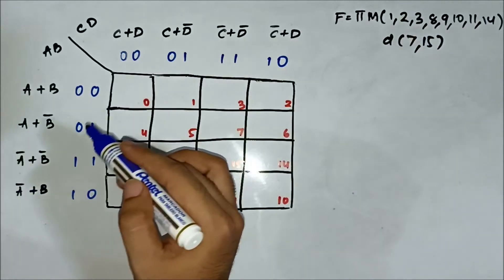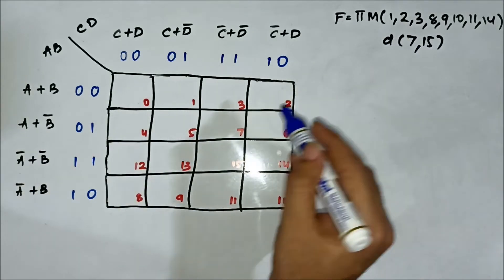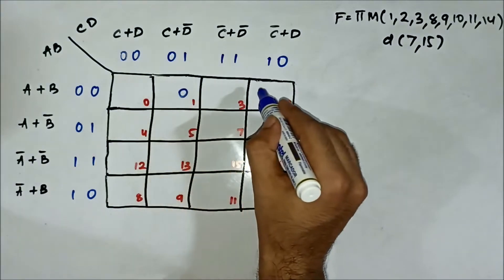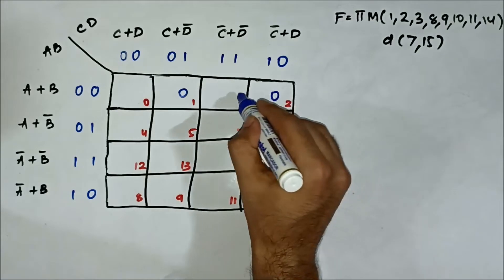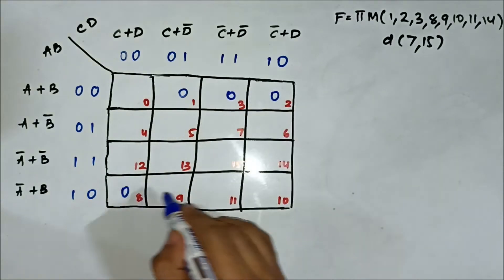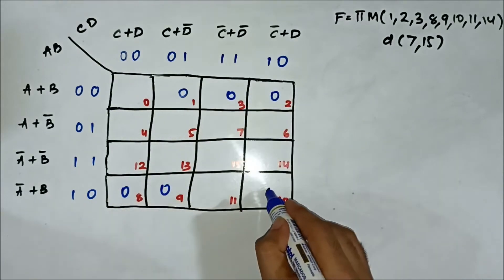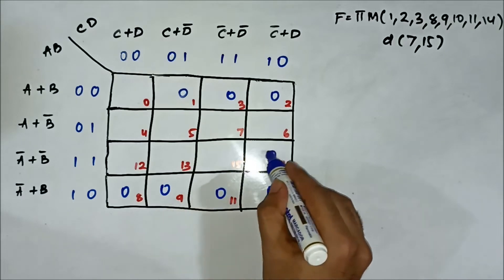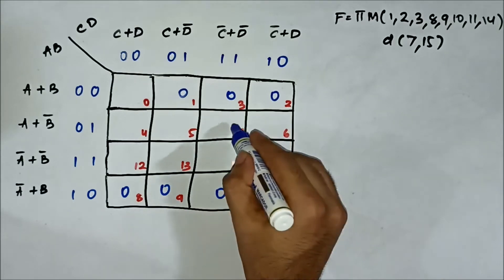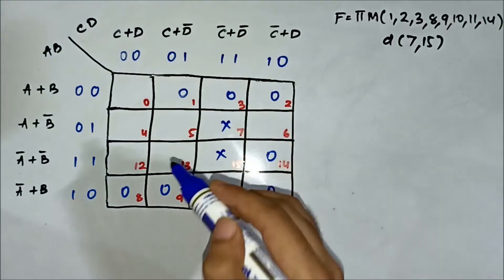We will map them onto the K-map. So mapping 1, 2, 3, 8, 9, 10, 11, 14 as max term values, and the don't care values are 7 and 15.